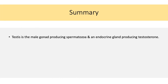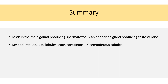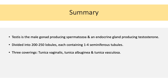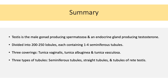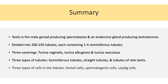In summary, the testis is the male gonad producing spermatozoa and acts as an endocrine gland producing testosterone. It is divided into 200 to 250 lobules, each containing 1 to 4 seminiferous tubules. It has three coverings from outside inward: tunica vaginalis, tunica albuginea, and tunica vasculosa. It has three types of tubules: seminiferous tubules, straight tubules, and rete testis tubules. There are three types of cells in the lobules: Sertoli cells and spermatogenic cells within the seminiferous tubules, and Leydig cells in the connective tissue stroma.